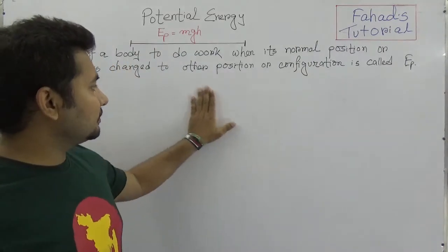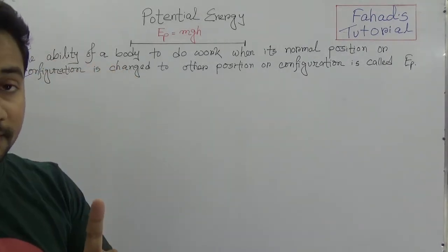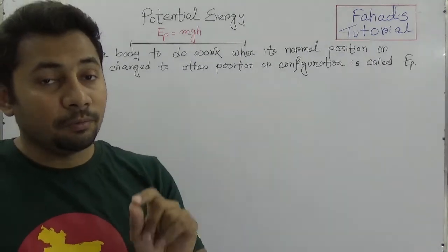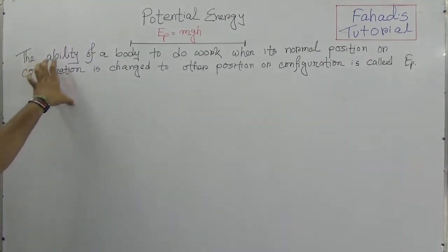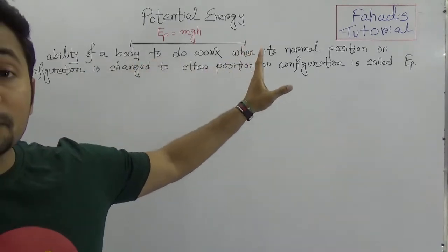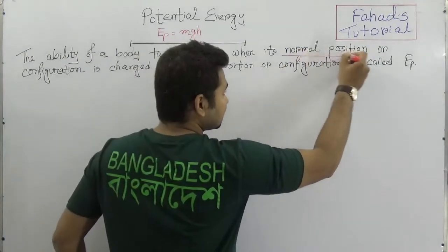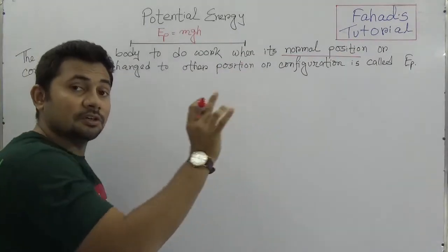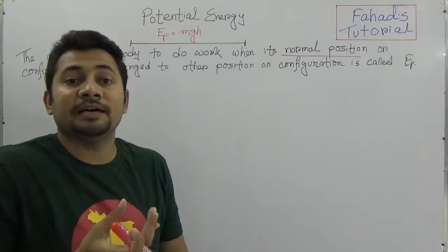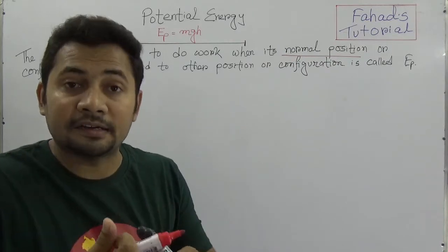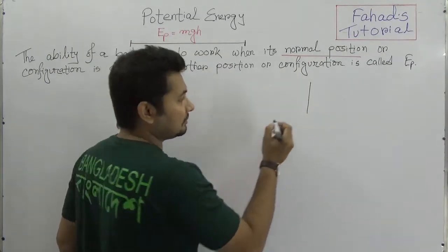Before explaining, the definition written here states that potential energy is the ability of a body to do work. You must remember that potential energy is acquired when the positions or the configurations of anything has been changed. Simply put: the ability of the body to do work when its normal positions or configurations is changed. When the position or configuration of a body changes and it acquires some energy, this is called potential energy.